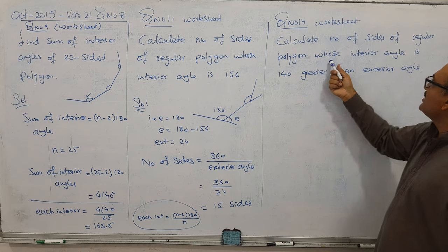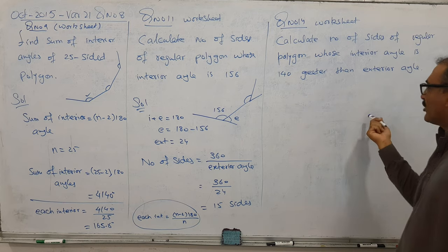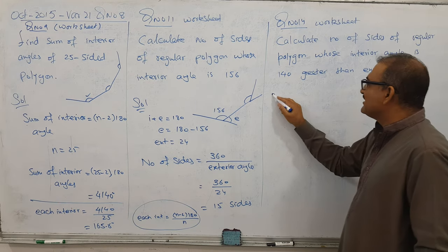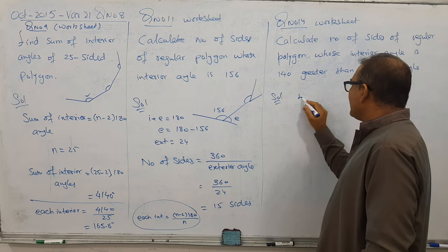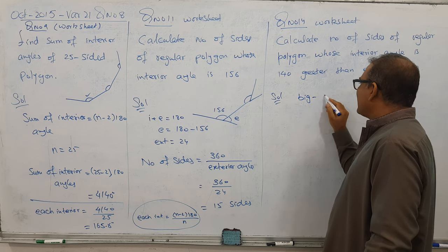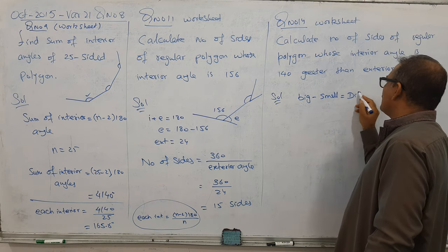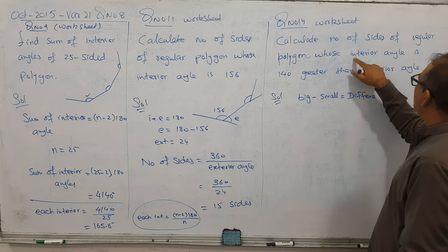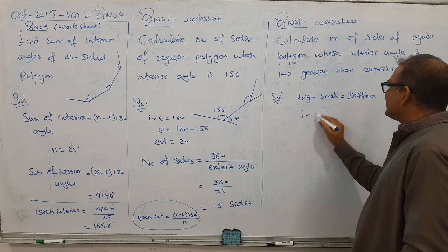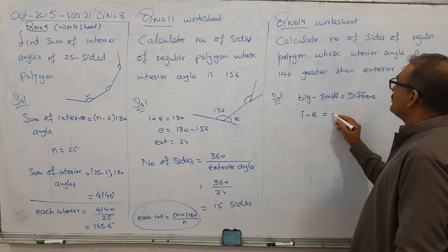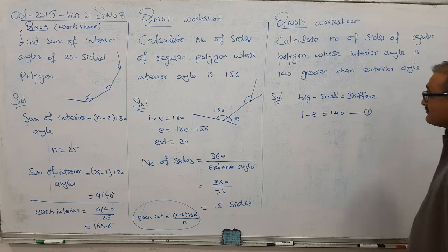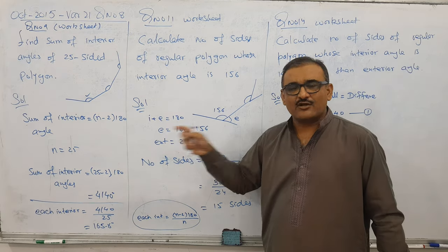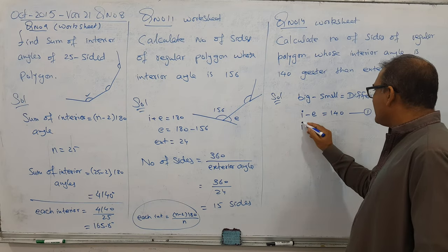This is textbook question, worksheet number 14: calculate the number of sides of a regular polygon whose interior angle is 140 degrees greater than the exterior angle. When greater or lesser comes, the bigger value minus smaller value equals the difference. So interior minus exterior equals 140 - that's equation number one. Interior plus exterior equals 180 on any straight line - that's equation number two.